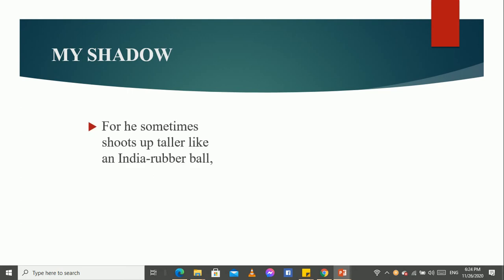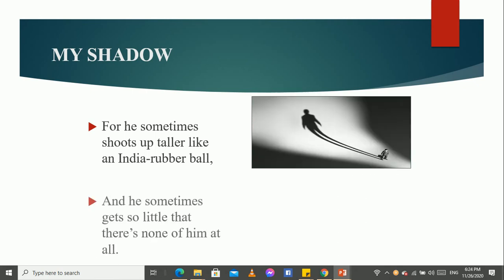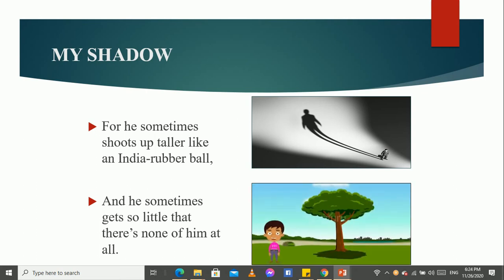For he sometimes shoots up taller like an Indian rubber ball. Sometimes, the shadow becomes very large and it becomes very long. And he sometimes gets so little that there is none of him at all. And sometimes, the shadow becomes very little, very tiny, exactly at the noon time. It becomes completely small or little.